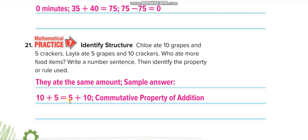Both are same. You know we are using commutative property of addition here. They ate the same amount. And you can see 10 plus 5, 5 plus 10. That is commutative property. The numbers are same on both sides but the order is different.